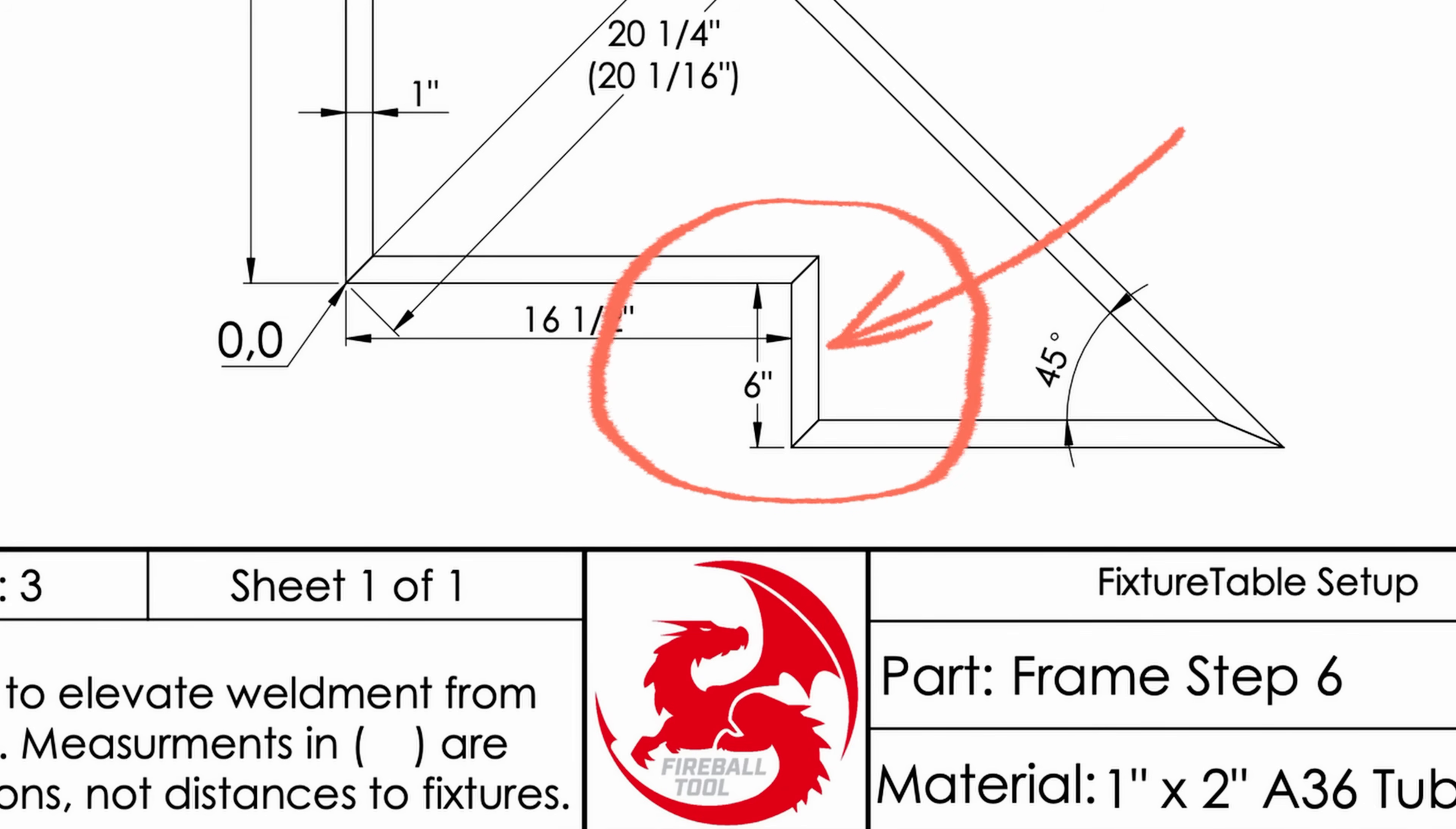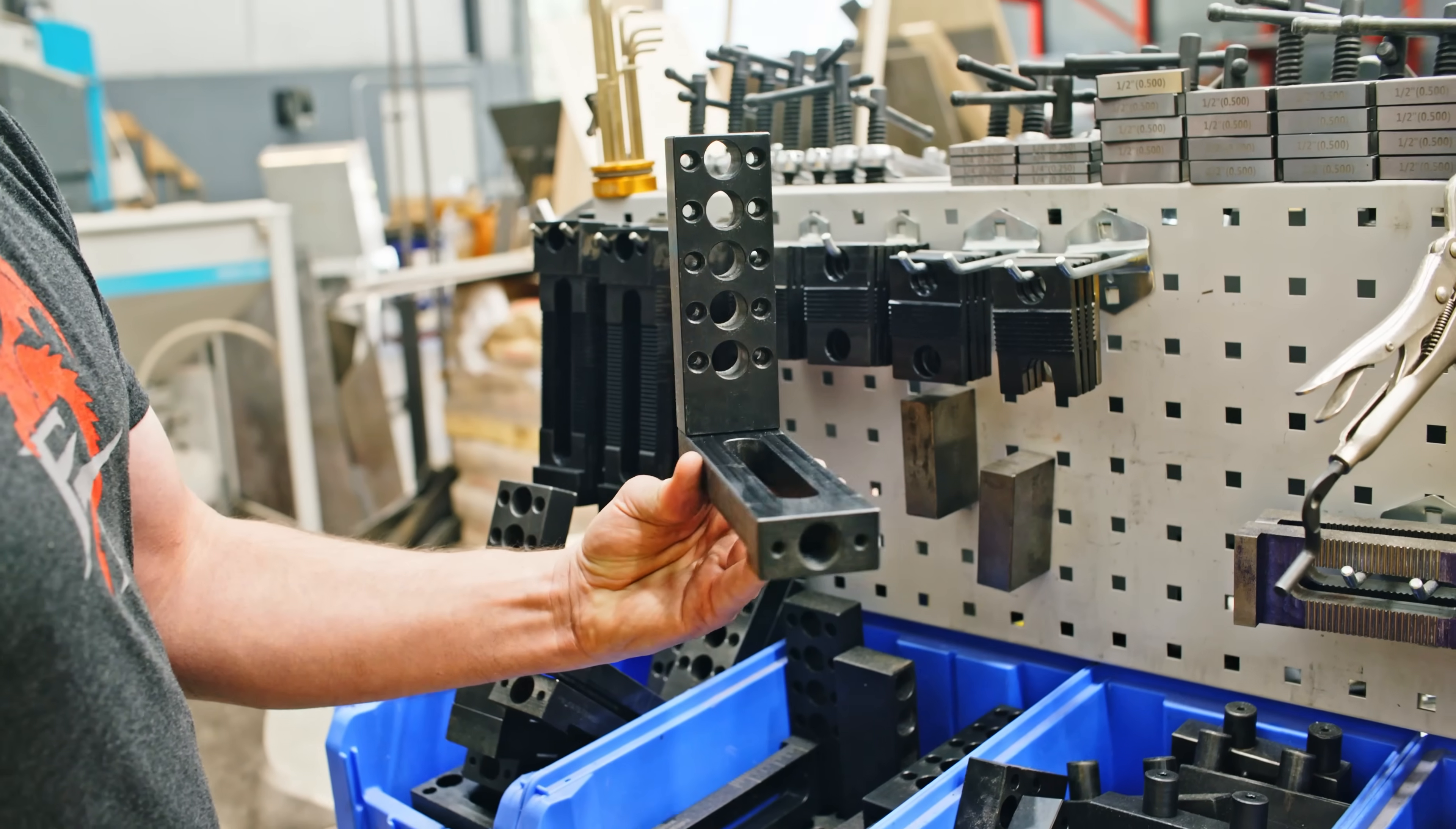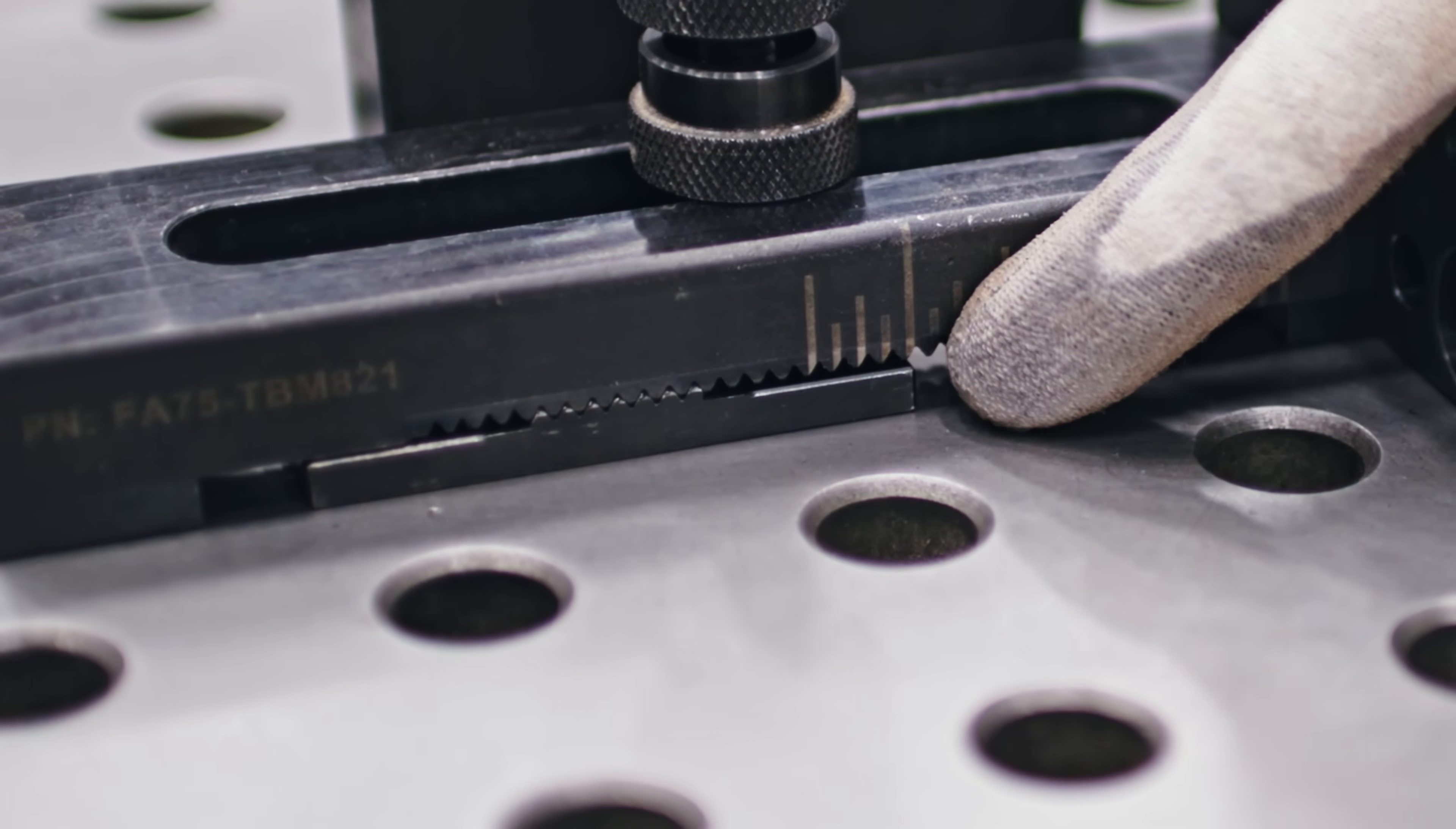This piece is 16 and a half inches from zero so let's put a stop there. I'm going to use this tooth block. The neat thing about this block is that I can configure it in many different ways. It's got a locking mechanism that locks this block together on eighth of an inch increments.